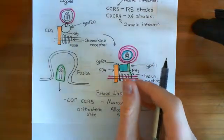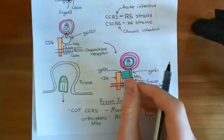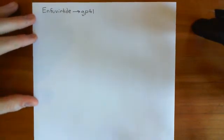Enfuvirtide also stops the fusion of the two membranes. Both drugs — Maraviroc and Enfuvirtide — can be used to prevent virus particles from fusing with cells and therefore stop HIV from entering cells. In the next video, we'll move on in the life cycle and look at what the nucleocapsid does once it's within the cytoplasm of the cell.